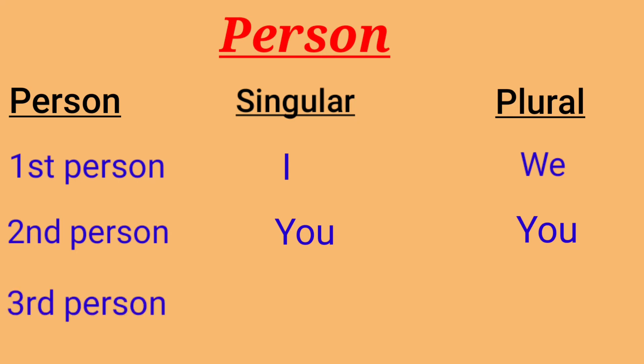When I speak about someone or something, it's called third person. The third person point of view belongs to the person or people being talked about. Third person refers to a third party individual. It uses the subject pronouns 'he,' 'she,' 'it' for singular and 'they' for third person plural.